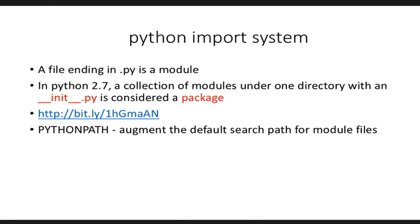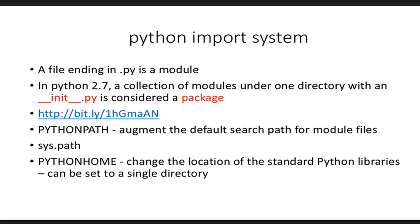Your Python path is something that can be dynamically changed using the sys.path command. I would be surprised if anyone's been running Python without having to resort to this. Your Python home, on the other hand, is another environment variable which lets you change the location of your standard Python libraries; you can just set it to a single location. So now we have an idea of what Python modules are and what Python packages are. What does packaging mean in Python?